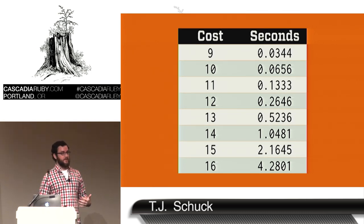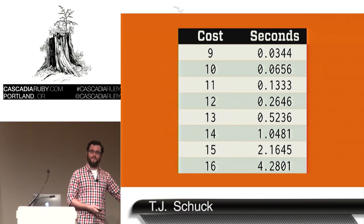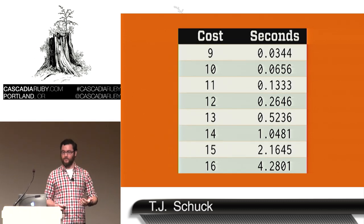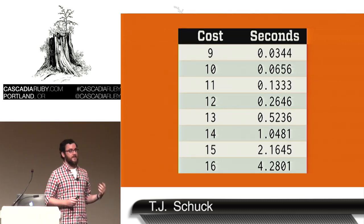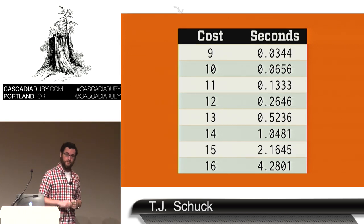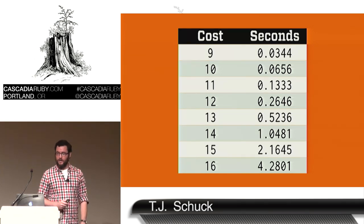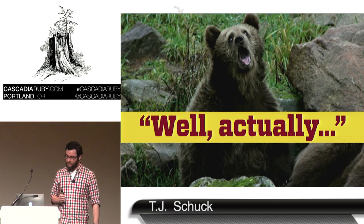Right now today, you probably don't want cost 16 because you don't want to add four seconds to your login flow. But somewhere in the 12 to 13 range is probably something that wouldn't be noticed by your users, but would definitely be noticed by an attacker. Using a cost of 12 at Harvest, that previous attack that took 87 seconds would now take about 84,000 years. So we've gotten over that hump of cost calculation where it's no longer worth it.